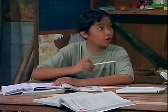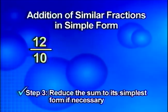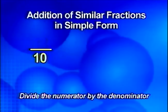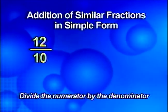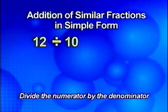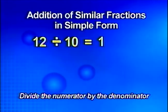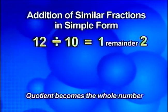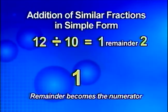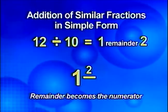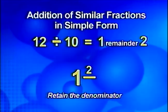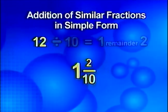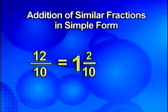We still have to reduce the sum to its simplest form. Twelve tenths can be simplified as a mixed number. Just divide the numerator by the denominator. So twelve divided by ten is one with a remainder two. The quotient one becomes the whole number, and the remainder two becomes the numerator. Retain the denominator ten. So the simplest form of twelve tenths is one and two tenths.